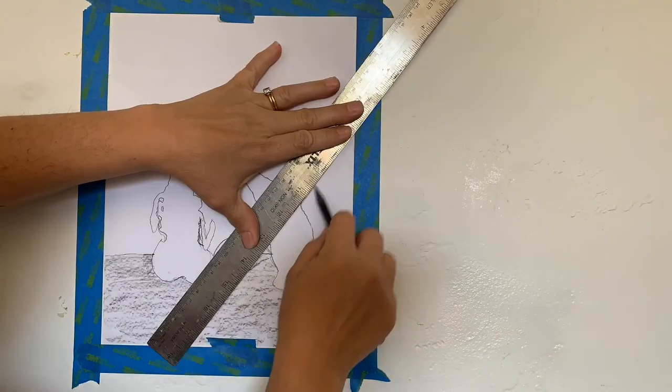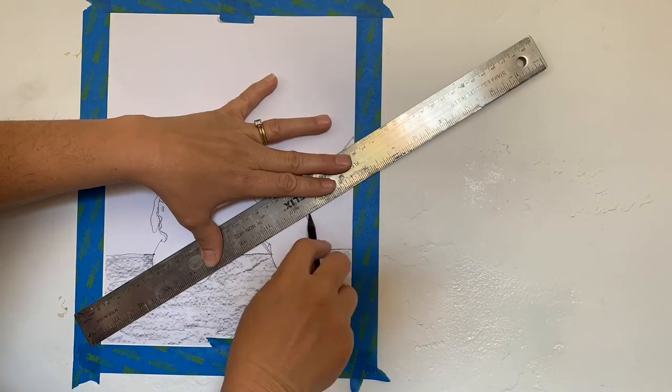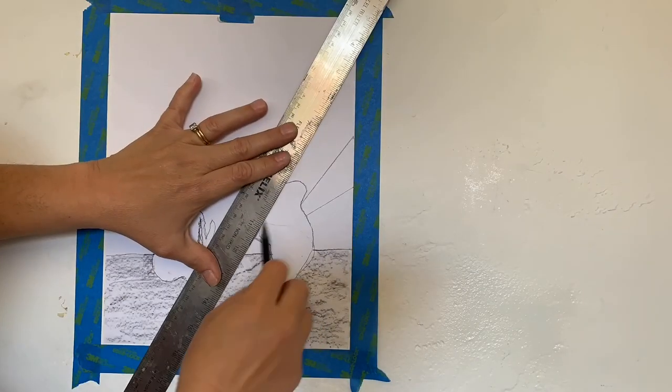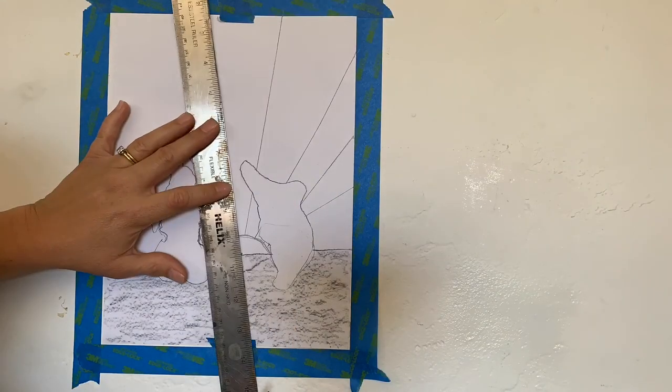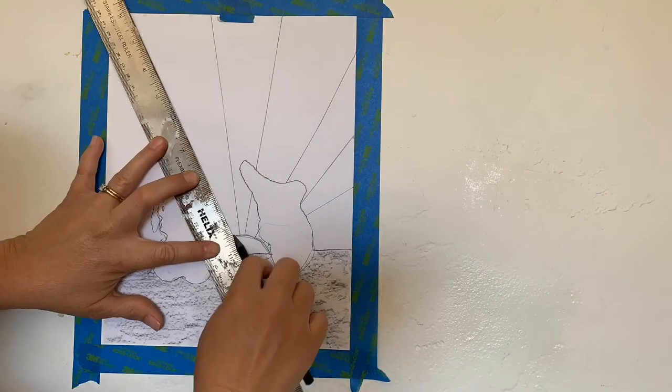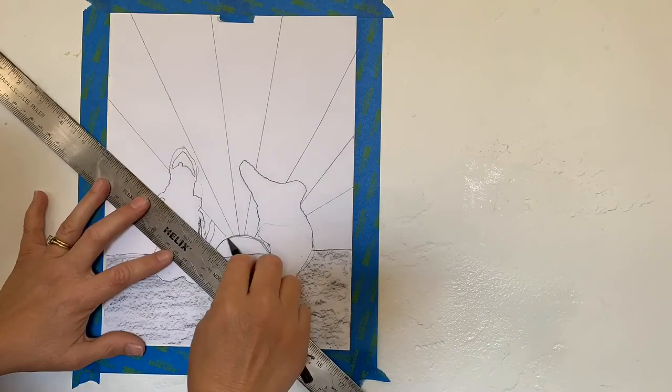In the center of my semicircle, I'm going to draw a dot. I'm going to place my ruler on the dot and draw straight lines from the dot to the outside edge of my paper, moving it slightly to create diagonal lines flowing from my semicircle all the way to the edge of my paper.